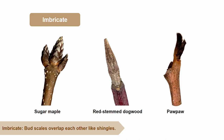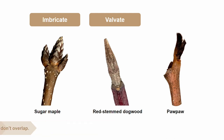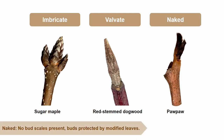The next type of bud scaling pattern is a valvate pattern. Instead of the bud scales overlapping each other like with the imbricate pattern, they meet in the middle. We can see this valvate pattern in red stem dogwood. Lastly, the final bud scale type is a naked bud. These buds have no bud scales present, but they can still be protected by small leaves. An example of a tree species that has a twig with a naked bud would be a pawpaw.